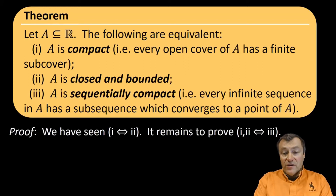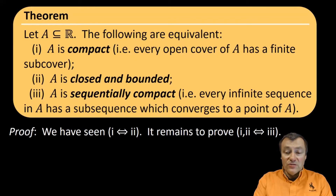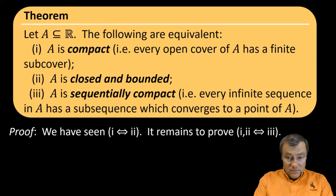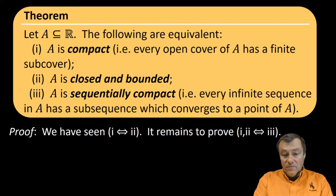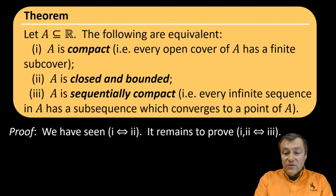We have also listed here in our theorem a second condition that A is closed and bounded. In our previous video, we proved that conditions 1 and 2 are equivalent. Here, we'll also prove that 1 and 2 are equivalent to condition 3, the condition of sequential compactness. Now, all this is in the setting of the real numbers, or Rn. In more general topological spaces, these conditions are not actually equivalent.